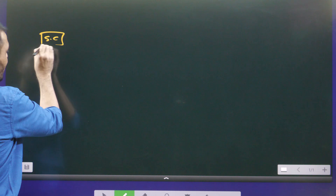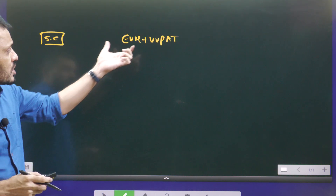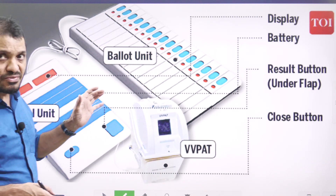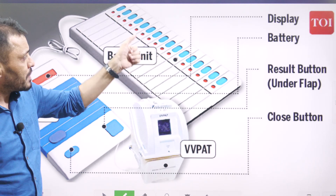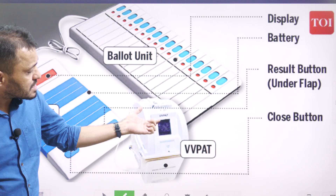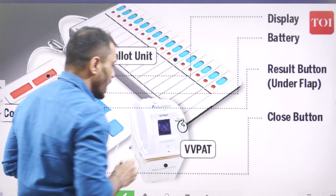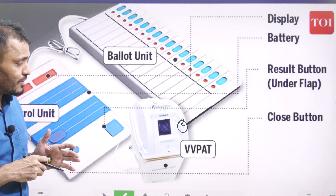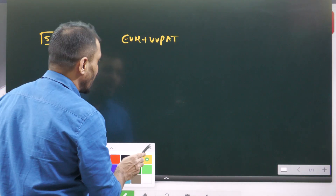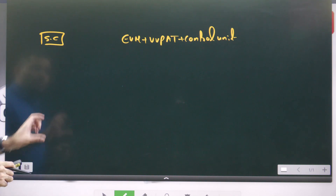The key elements are the Supreme Court and EVM plus VVPAT. Regarding the EVM-VVPAT system, there are three units: first, the EVM — generally known as the ballot unit — where you press the button against a candidate. Second, the VVPAT, where the candidate name, symbol, and serial number are displayed; the paper is cut off and stored in a box. Third, the control unit. These three together form the process.